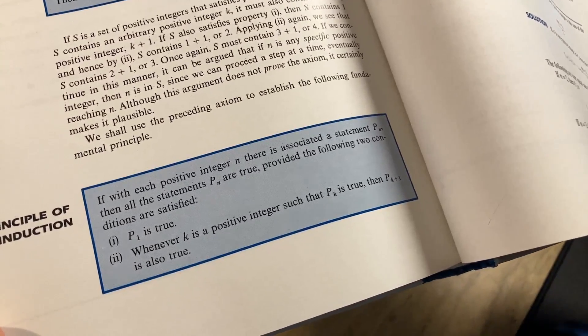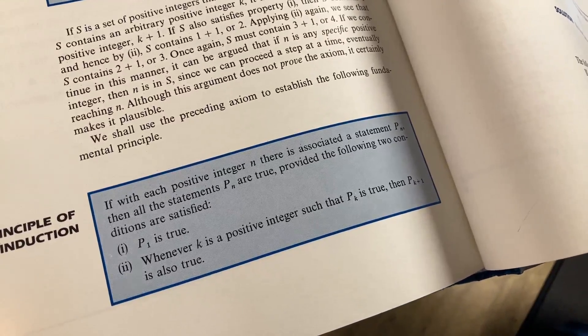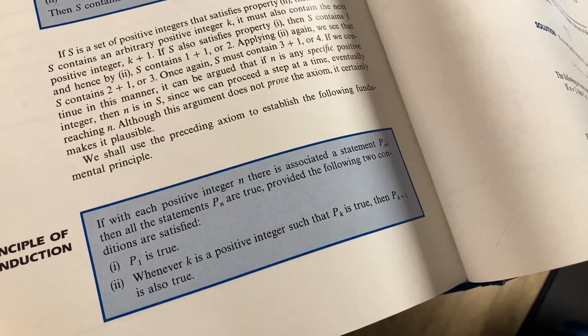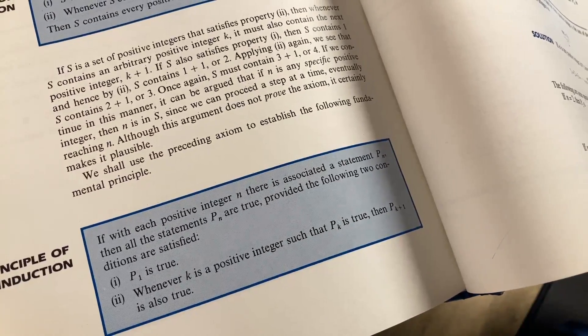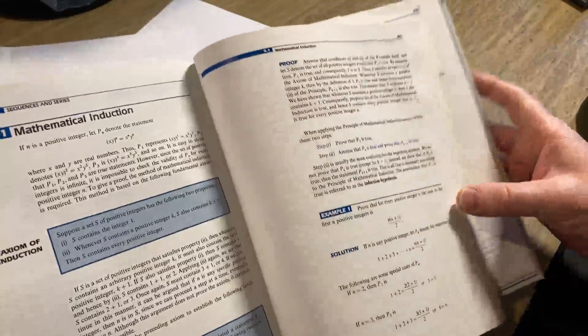So one is that P sub 1 is true. That means that the statement is true when you plug in 1. Two, whenever k is a positive integer such that P_k is true, then P sub k plus 1 is also true. And they prove it here.